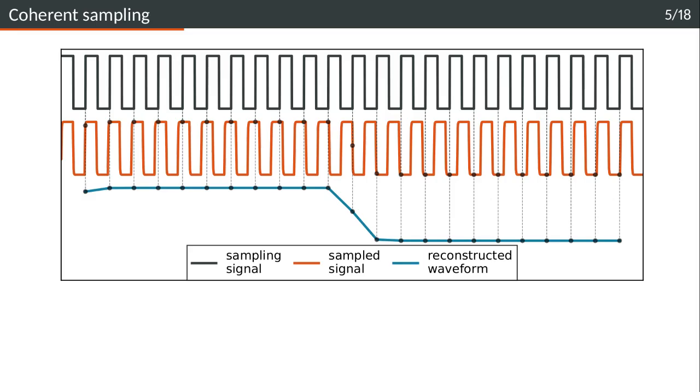Our TRNG is the PLL TRNG and this PLL TRNG is based on coherent sampling. For coherent sampling we have the sampling signal and the sampled signal that share a special relation between their frequencies, which allows us to reconstruct the waveform of the sampled signal from the samples. In the reconstructed waveform the sample of interest is the one in the middle because it lies on the falling edge, but actually in a real system it will be either a 1 or a 0 depending on the clock jitter.